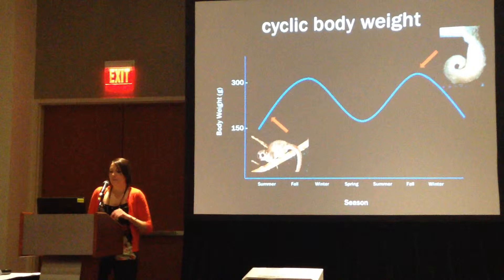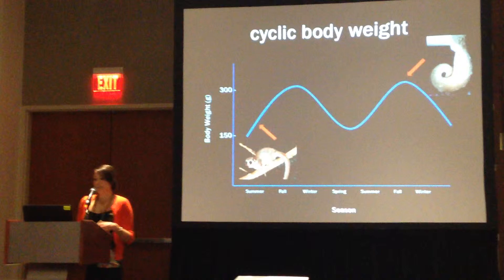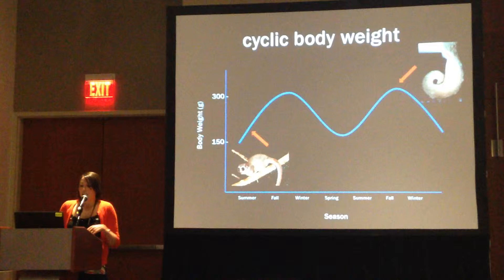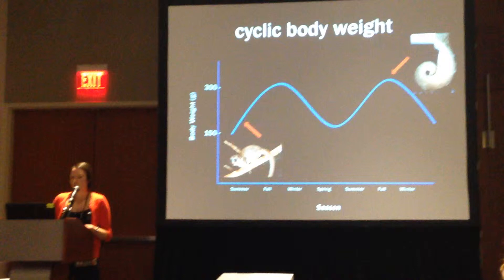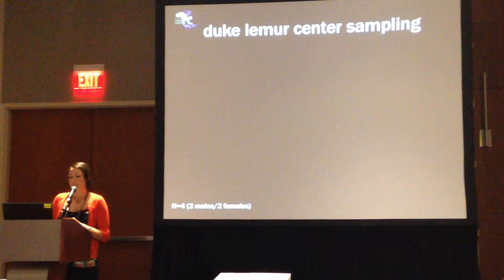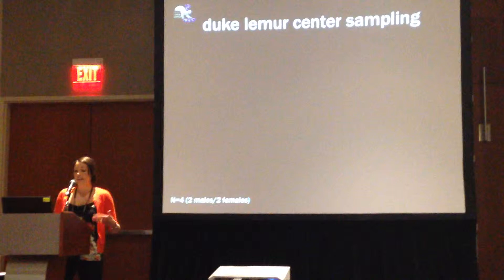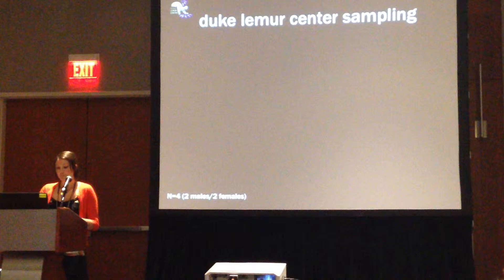Fat-tailed dwarf lemurs display distinct body weight patterns. In the active state, they are roughly 150 grams. Sometime in the fall, they increase their food intake, decrease locomotion, and begin to store fat in their tails, nearly doubling their body weight up to 300 grams. In winter, they enter hibernation, where they begin to fast and rely solely on their stored fat reserves to fuel them throughout the hibernation season. This project involves sampling captive animals at the Duke Lemur Center at three time points, chosen as the most dynamic representation of the fat accumulation and breakdown phases of this annual cycle.